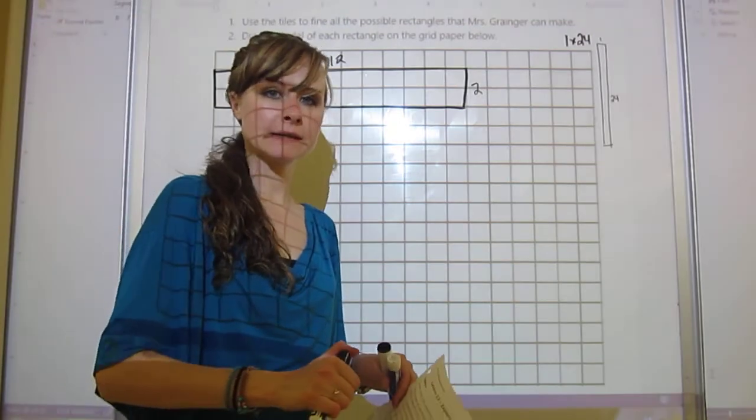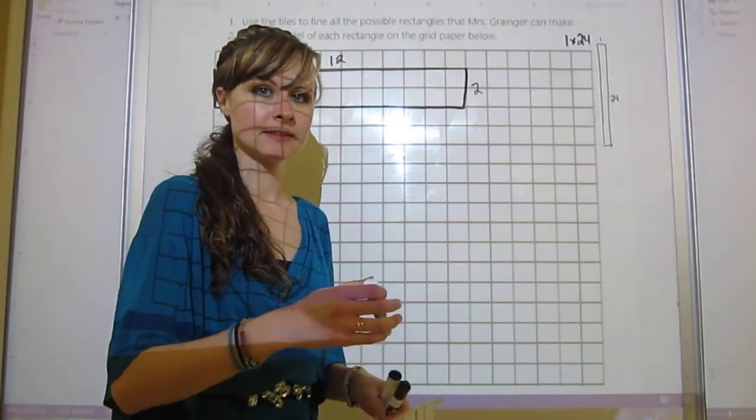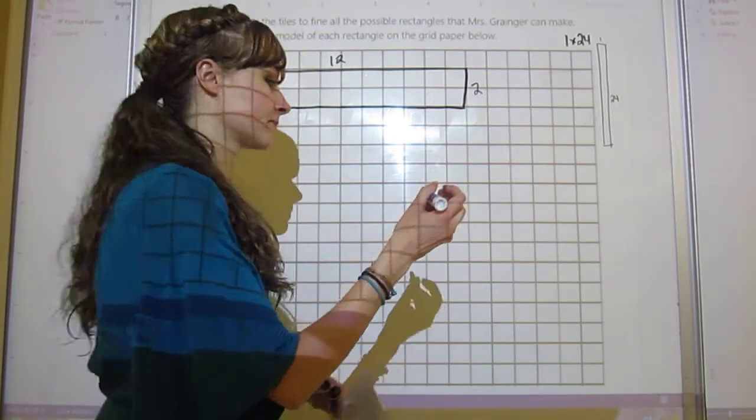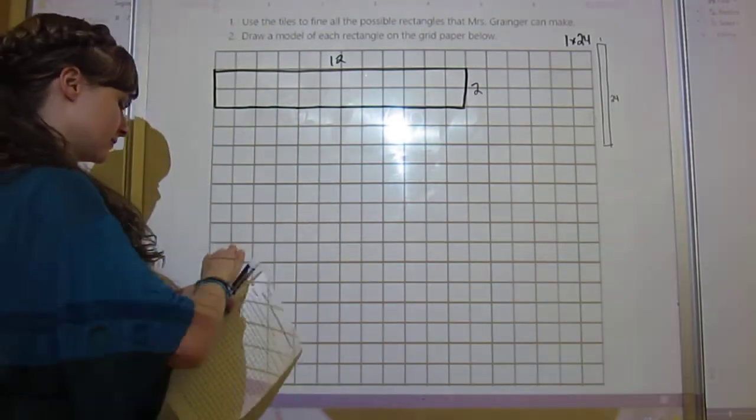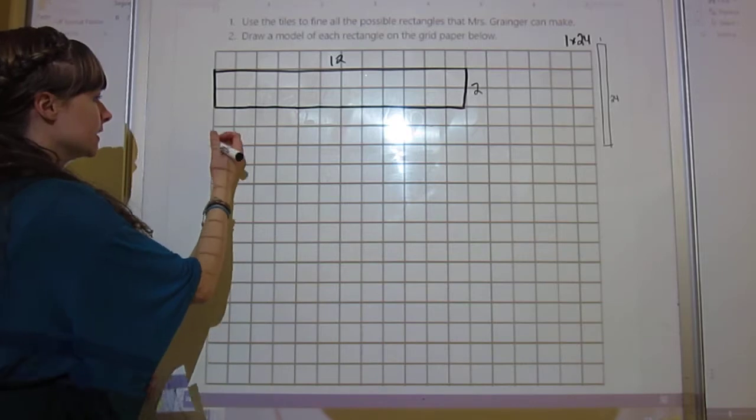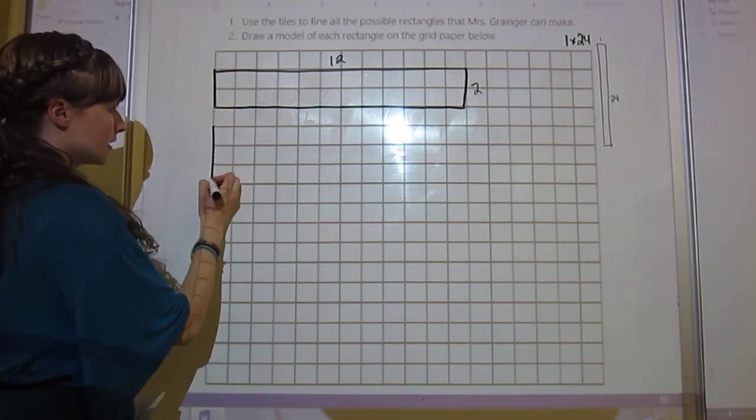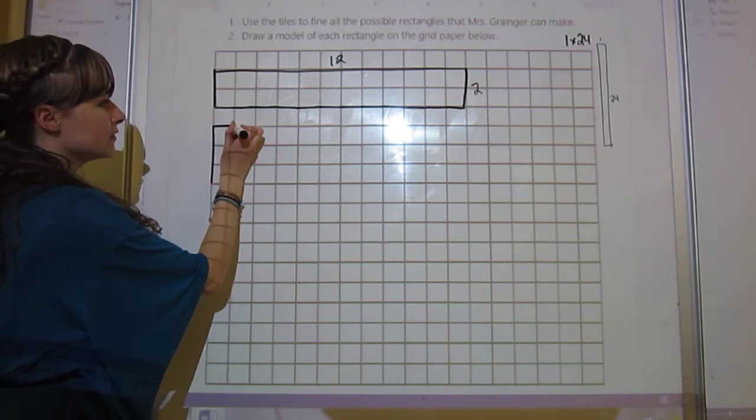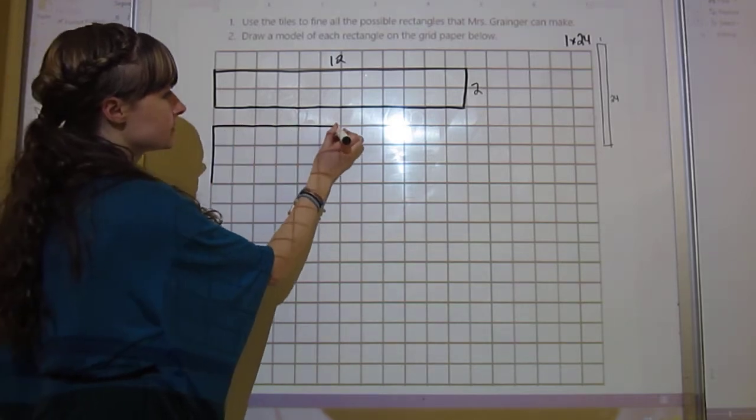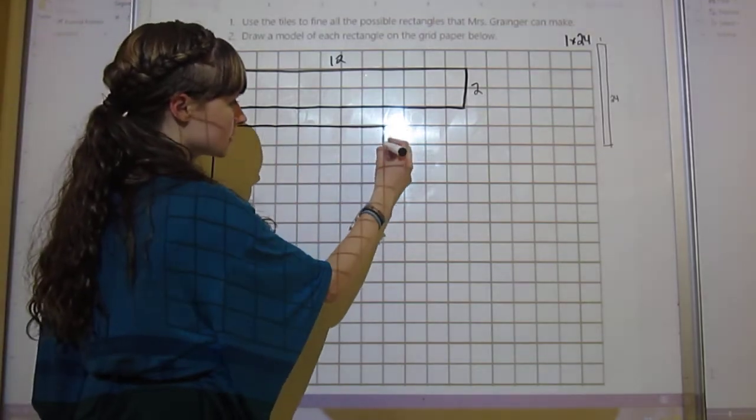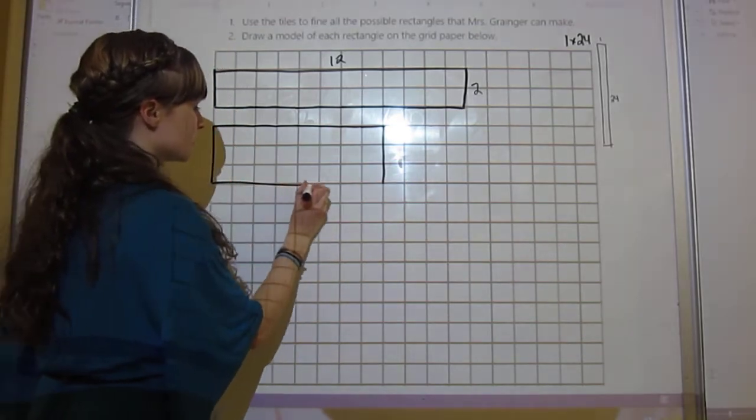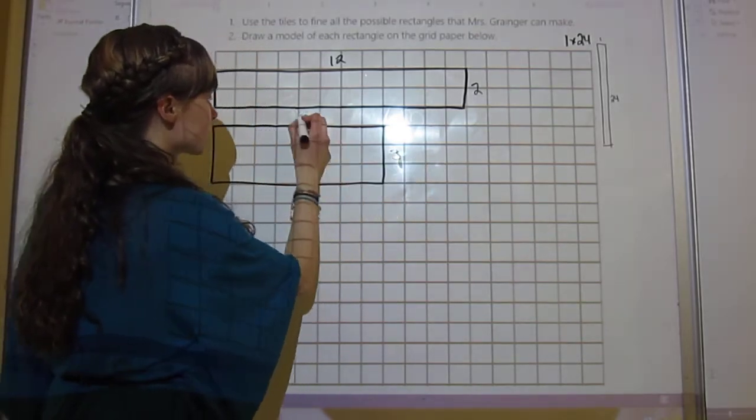Next up we can do a 3 because 3 times 8 is 24. So I can go down 1, 2, 3, and then I'm going to go across 8: 1, 2, 3, 4, 5, 6, 7, 8. And then I label this is 3 and this is 8.